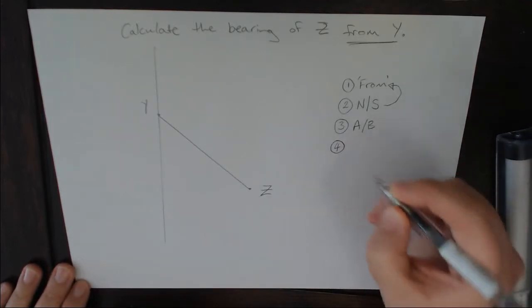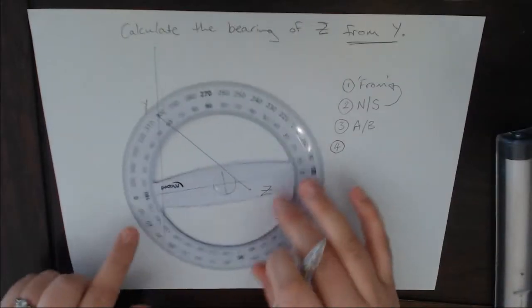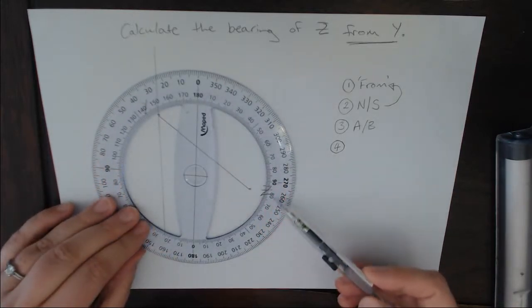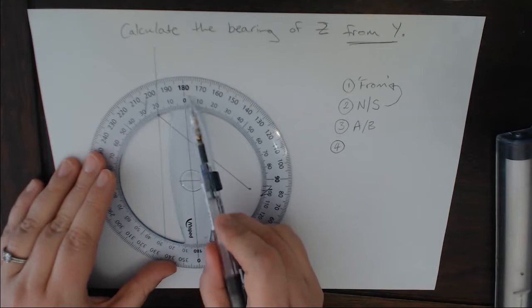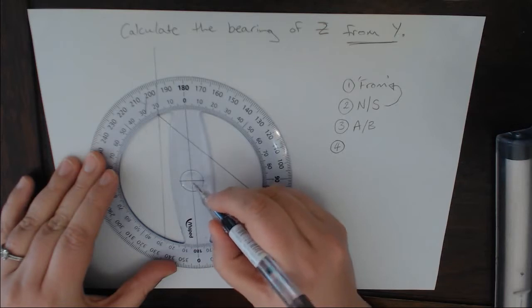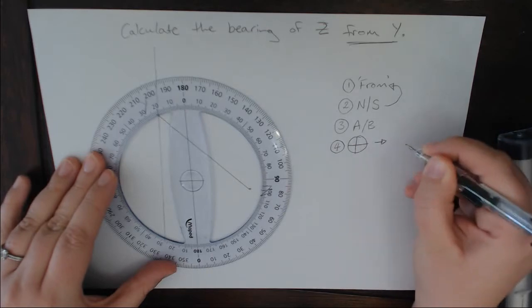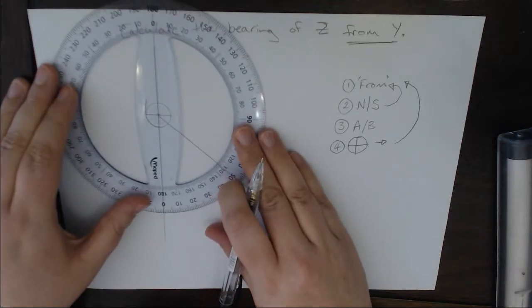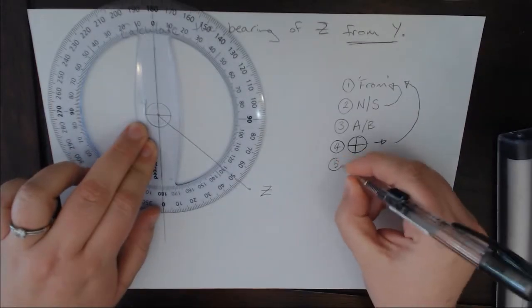My next step is I'm going to get my protractor. I have one of these 360 degree protractors. I'm not a huge fan of them myself, I prefer the 180. With these ones you have to make extra sure that you are using the section that actually goes from 0 to 180. I'm going to take my little cross in the middle of the protractor and place that on my from point.